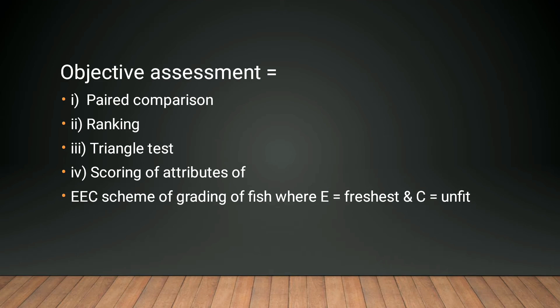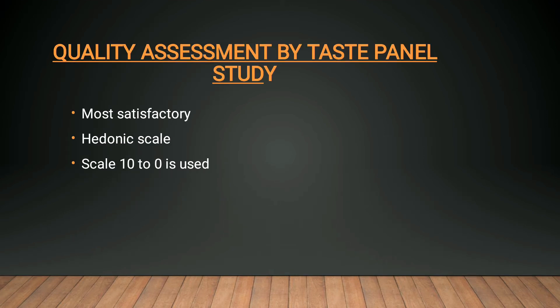After that, the QIM method was put forth because the EU scheme was not so well-known. The QIM method became popular because it is species-specific — in different species we can detect the kind of deterioration. In quality assessment by taste panel, using the hedonic scale, you are allowed to compare which sample is most acceptable. If it is given zero on the scale it means it is very much fit to eat, and if it is given 10 it means it is unfit.